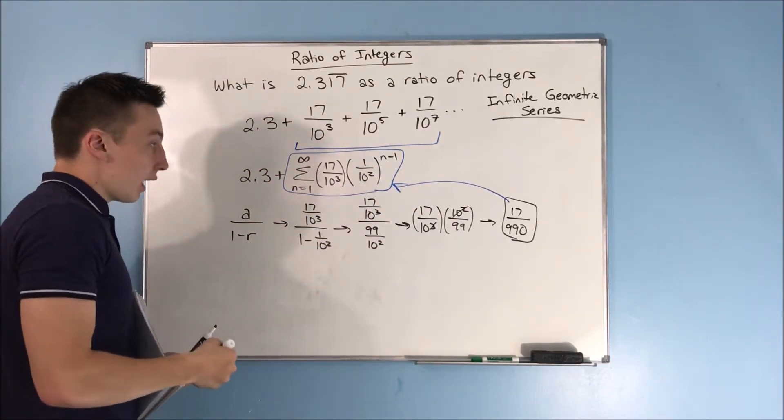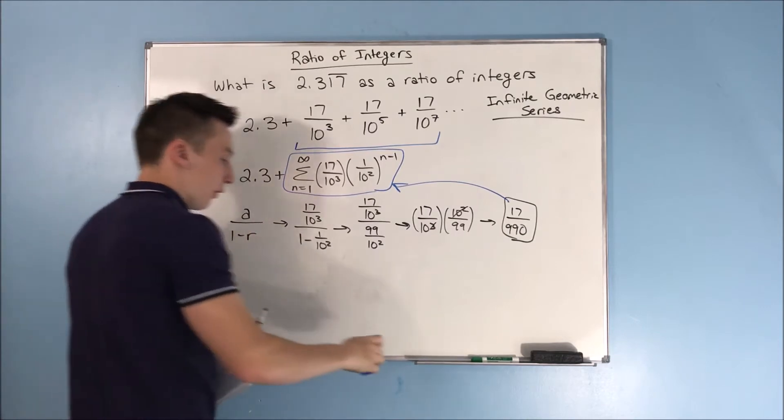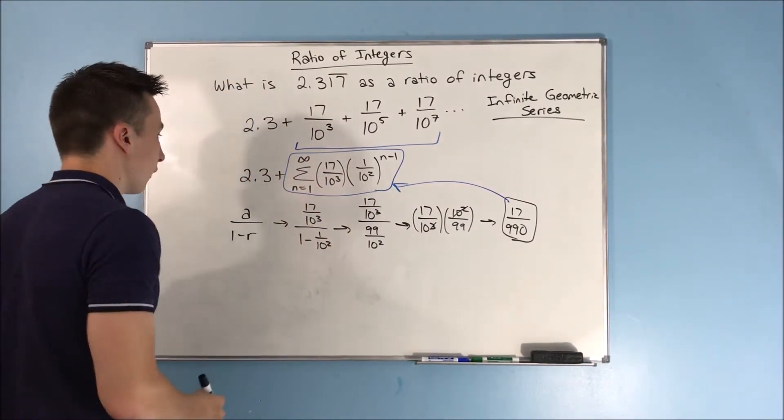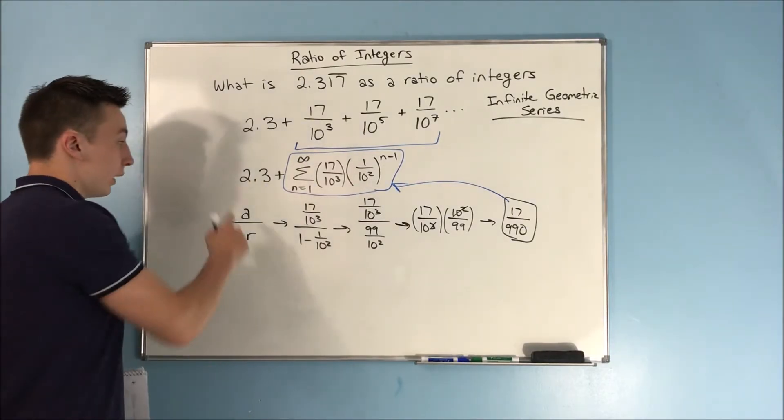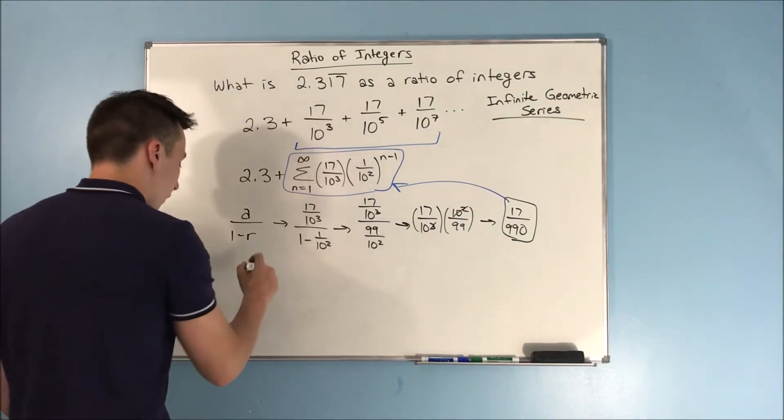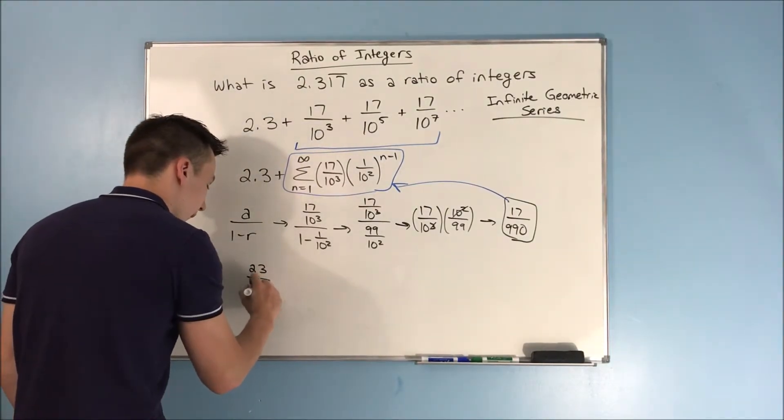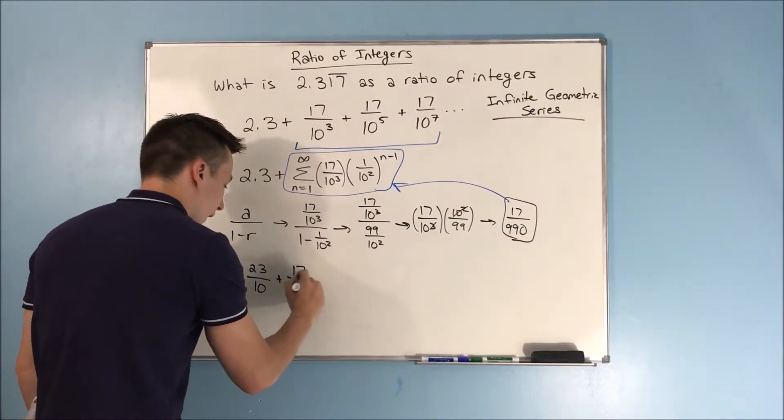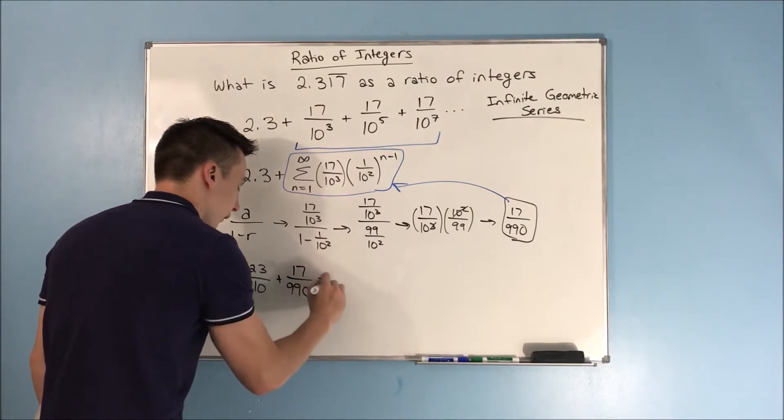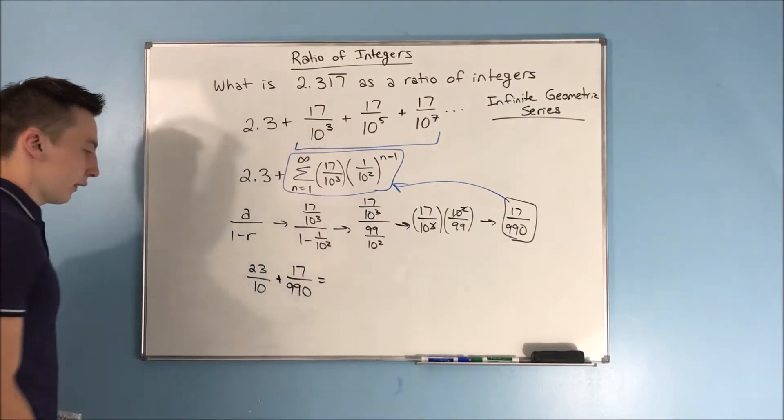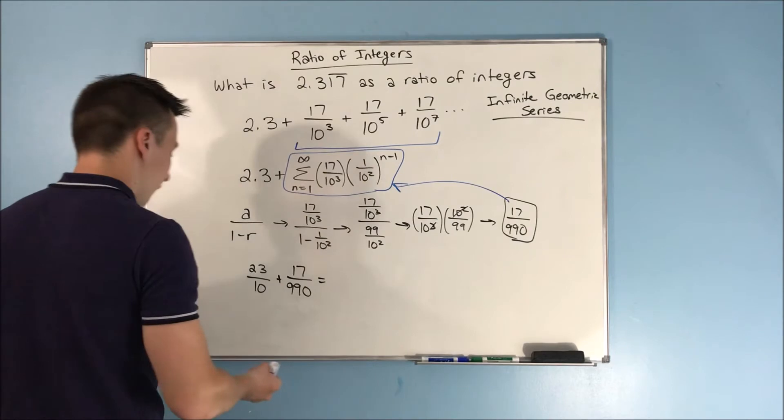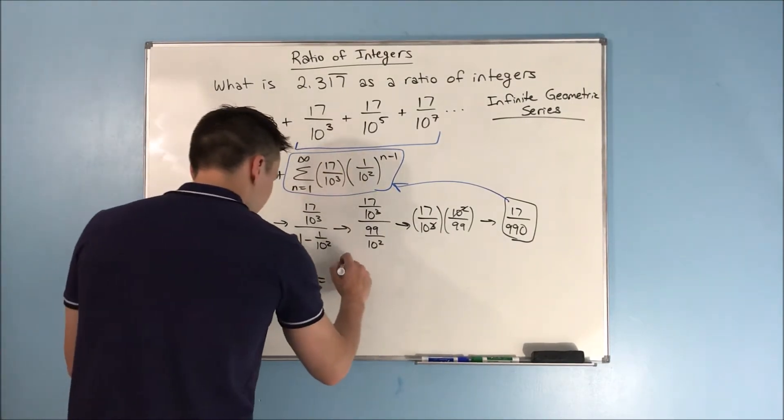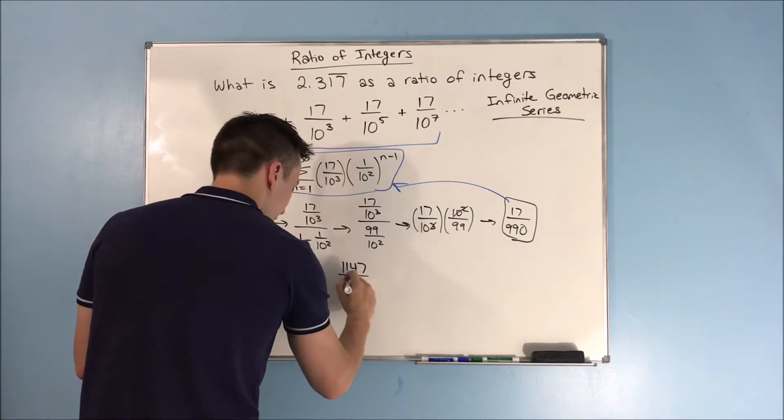We need to find what this 2.3 is going to be as a fraction, and that's not overly difficult. So we can write this 2.3 as 23 over 10, and we can add our 17 over 990 to it. Saving you all the finding common denominators and adding through, we just end up with 1147 over 495.